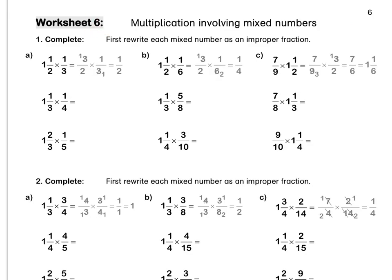Worksheet 6: multiplication involving mixed numbers. First, rewrite each mixed number as an improper fraction. So for this sum, we rewrite our mixed number as 3 over 2 times a third. Then we simplify our 3s and multiply out to get a half.